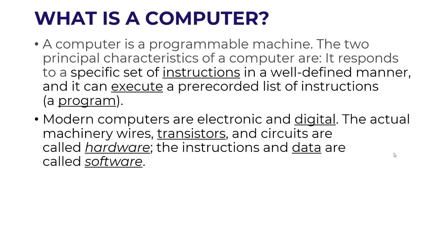We provide input to the computer, and the computer processes the input and gives the final output. The output is displayed with the help of output devices connected to the computer, like monitor, printer, and speaker. Modern computers are electronic and digital. The actual machinery — wires, transistors, and circuits — are called the hardware. The instructions and data are called software.